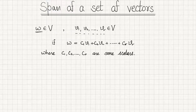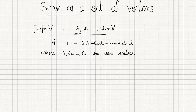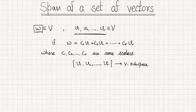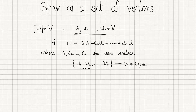If we are able to find these coefficients or scalars, then we can say that w is a linear combination of these vectors. We also proved that all the possible linear combinations of the vectors form a vector subspace, and this is the smallest subspace containing all these vectors. Now let us begin with the definition of span of a set of vectors.